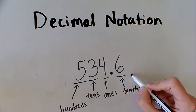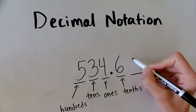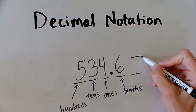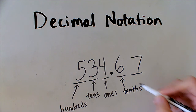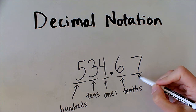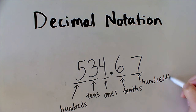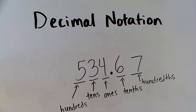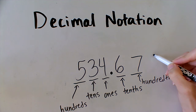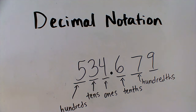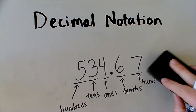After the tenths place, we have the hundredths place. So if I were to put a digit here, I now have a 7 in the hundredths place, so it is worth 7 hundredths. Hundredths are 10 times smaller than tenths. I could even go smaller — I could put another digit, and this would be the thousandths place. But we're not going to worry about thousandths right now.